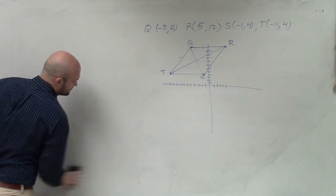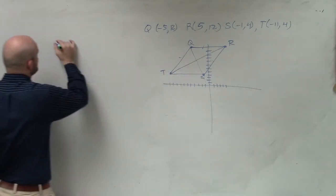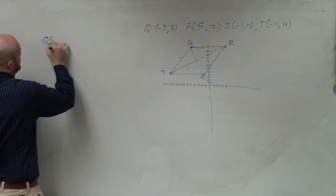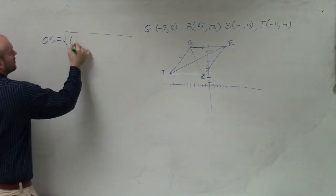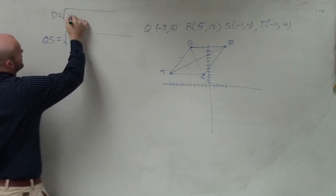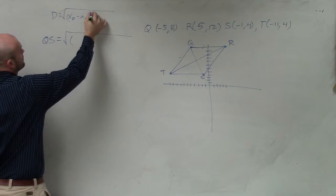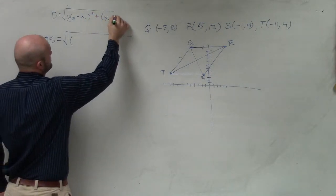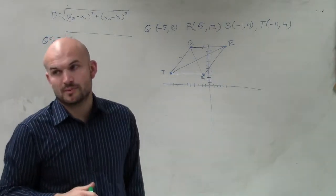Apply the distance formula. So what we're going to do is we're going to do the distance of QS. So remember, the square root of, let's do the distance here. Square root of x2 minus x1 squared plus y2 minus y1 squared.